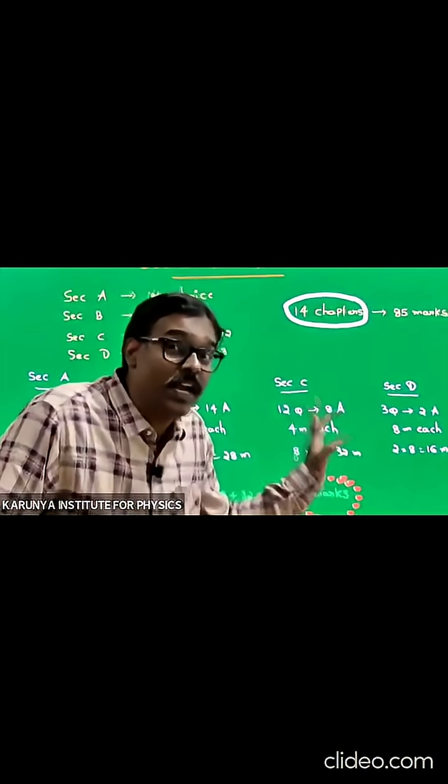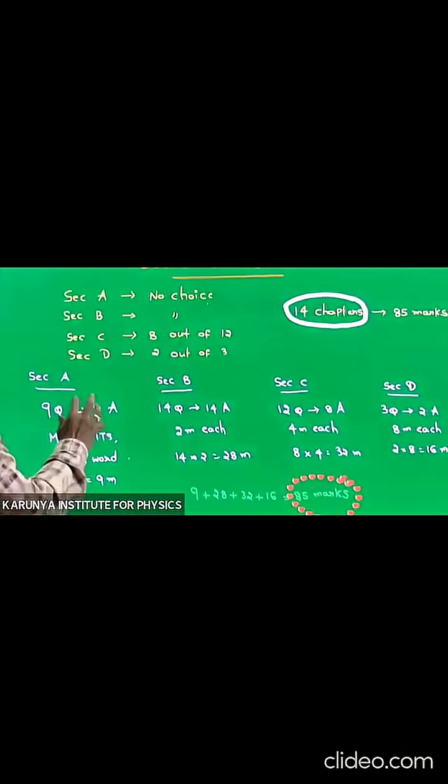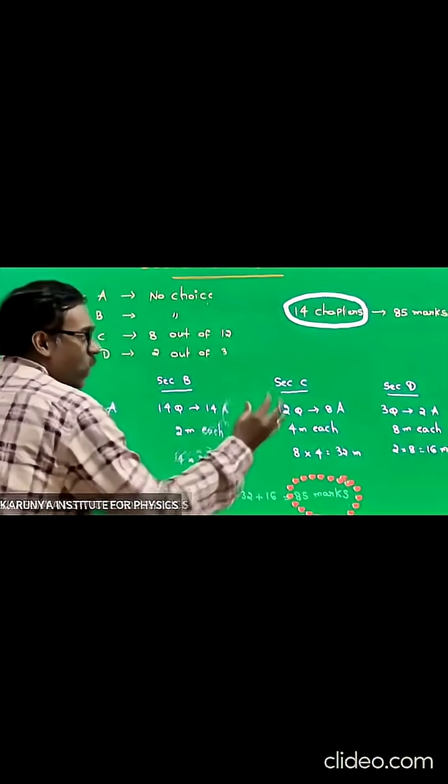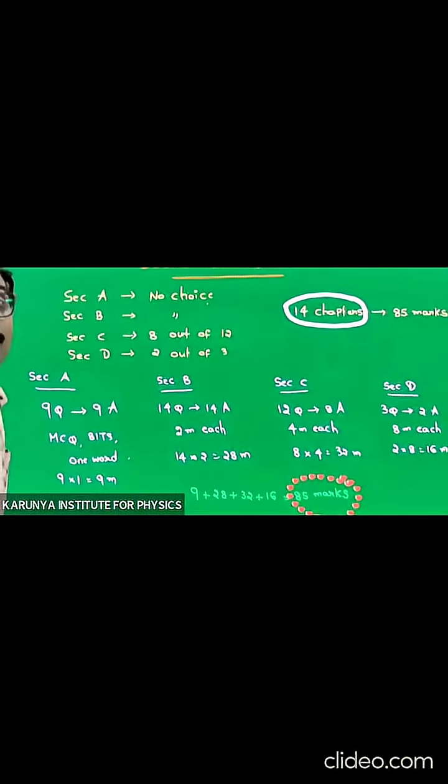Section D has three questions at eight marks each. Answer two of them, so eight into two equals sixteen marks. In summary, Section A is nine marks, Section B is twenty-eight marks, Section C is thirty-two marks, Section D is sixteen marks, totaling eighty-five marks.